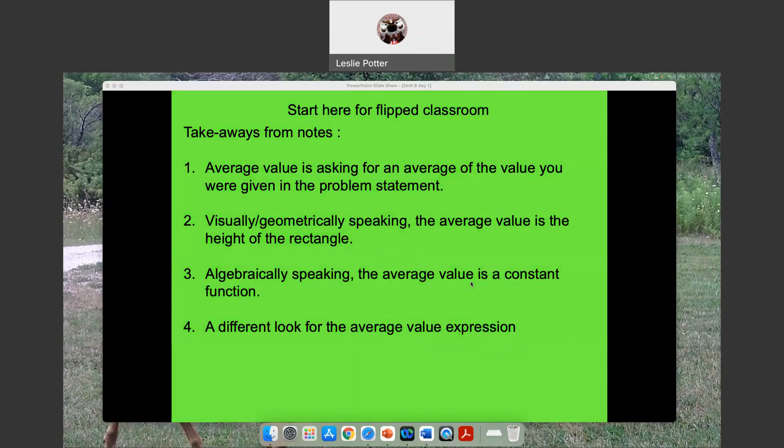So the average value might look something like this, where maybe this rectangle, hence the term constant function, right, y equals whatever this value is. The area of this rectangle is the same as the area of this shape. So all of the stuff up here basically gets chopped up into little bits, and some of it gets stuffed here and some of it gets stuffed here, so we can make a rectangle. That makes sense.